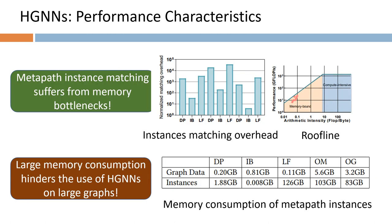Metapath instance matching is usually treated as the pre-processing phase. However, it results in significant memory consumption. Studies show that the memory consumption for storing metapath instances is much larger than the original graph data. Such high memory consumption limits the applicability of heterogeneous graph neural networks on large graphs.